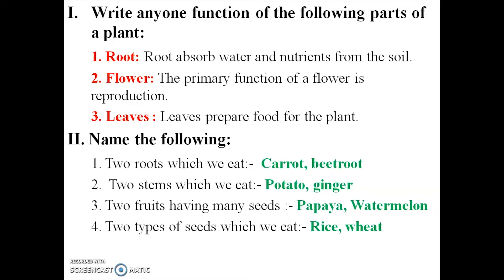After the flower, fruits and vegetables come out of the flower, and inside the fruits there are seeds. The seeds then grow through germination into a sapling, and then the sapling grows into a plant. So the primary function of a flower is reproduction.